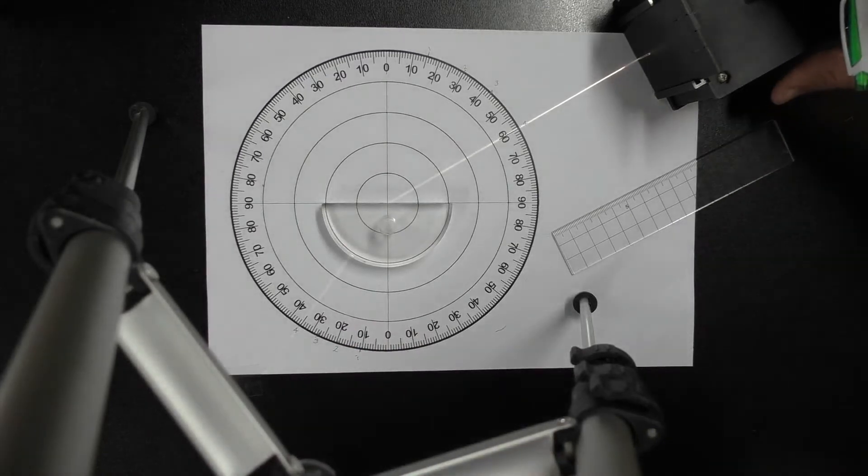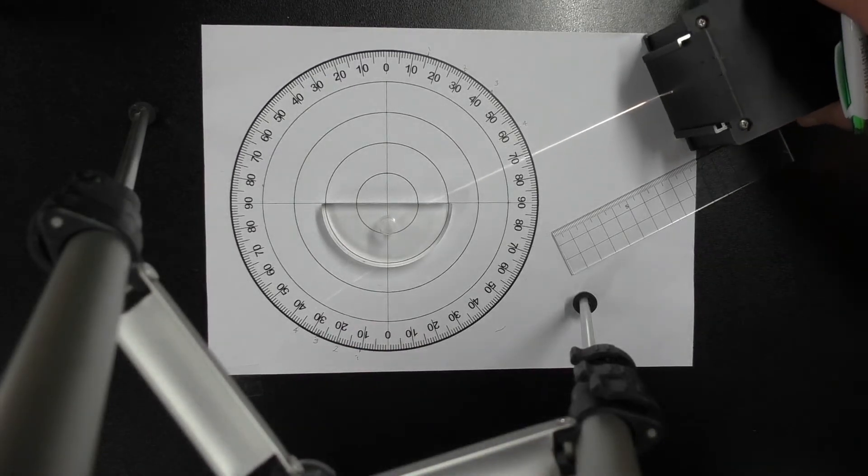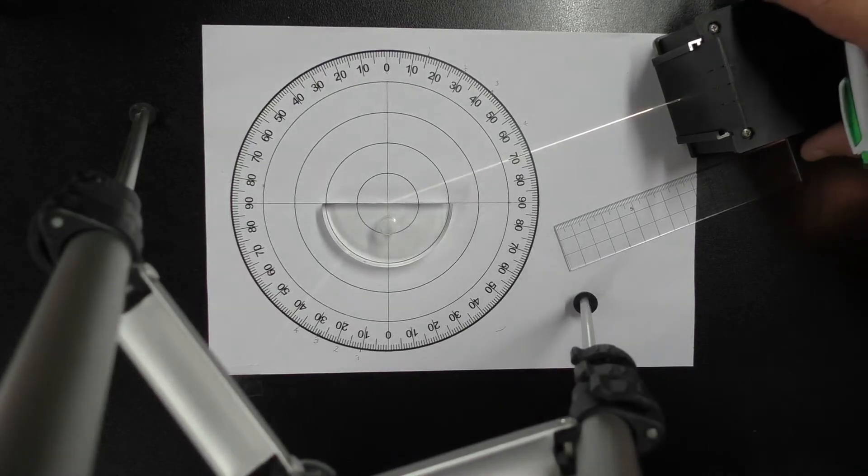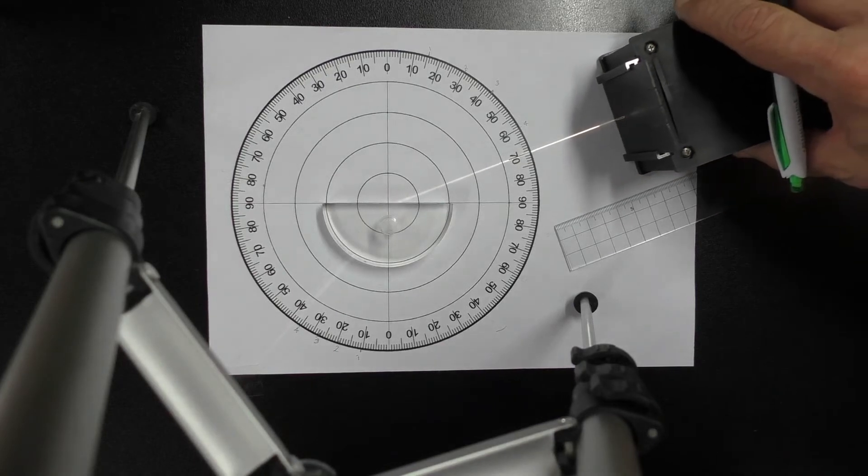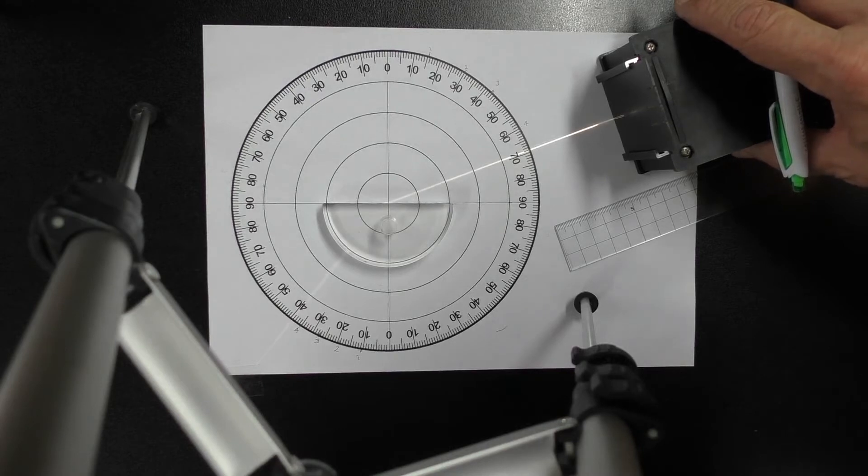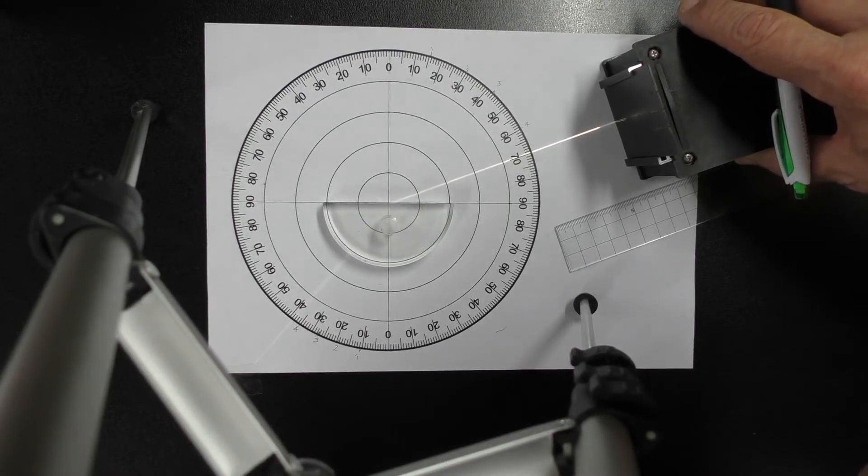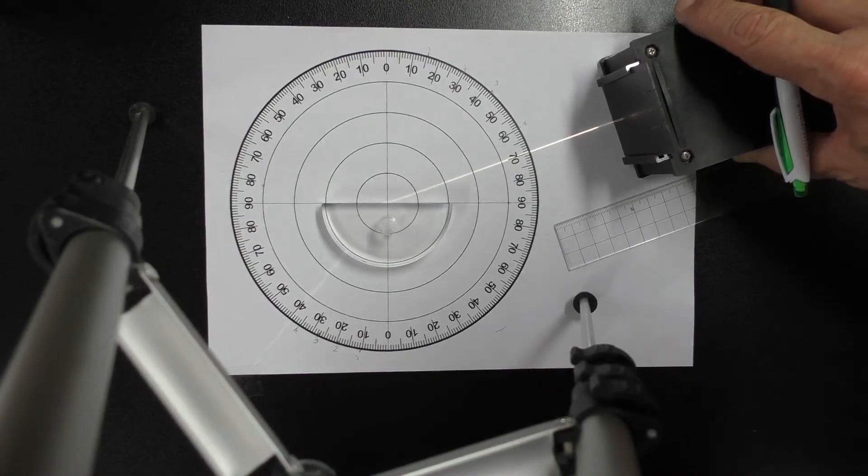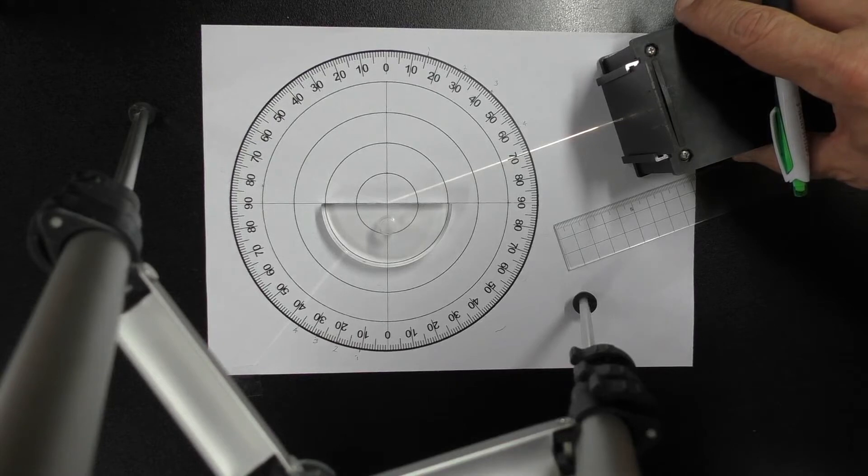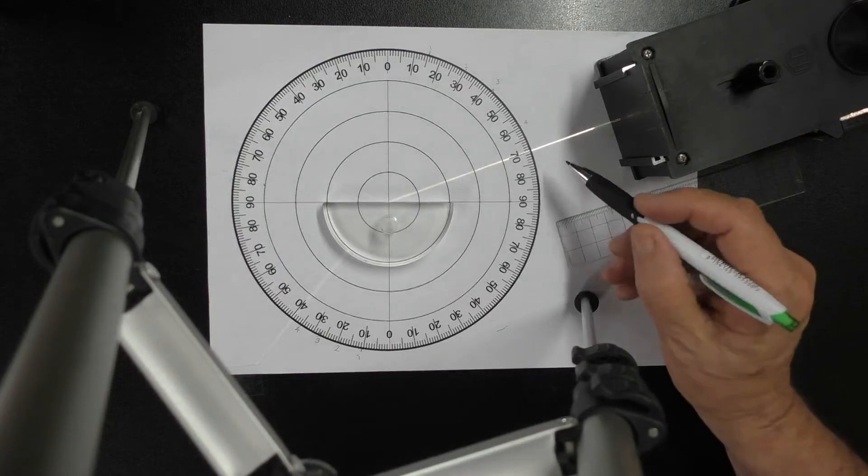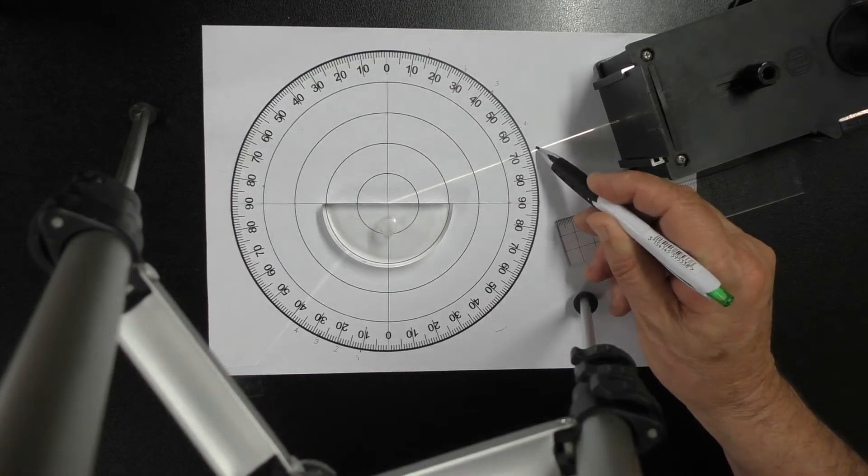And further around maybe I'll go to 70. I've got it on 70 there now and it's heading right for the center. Okay, now it's on 70. So I've got it there now. So I'll put a little mark there for ray number 5.